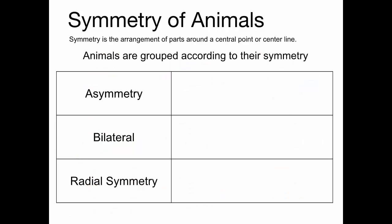When categorizing invertebrates into their phyla, one thing we look at is their symmetry — the arrangement of the parts of an organism. There are really three categories: asymmetrical, bilateral symmetry, or radial symmetry.